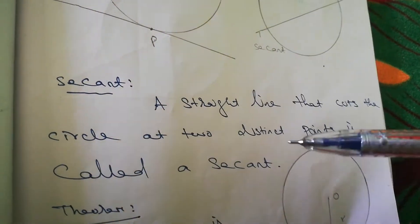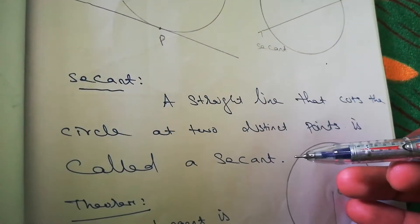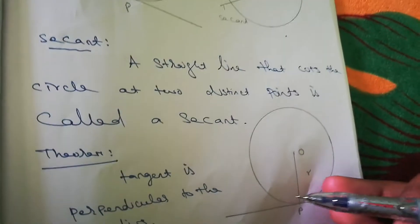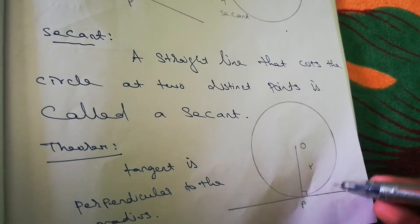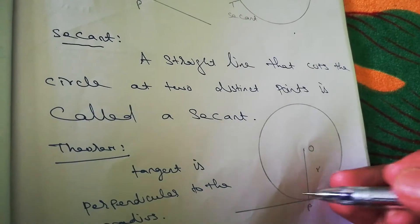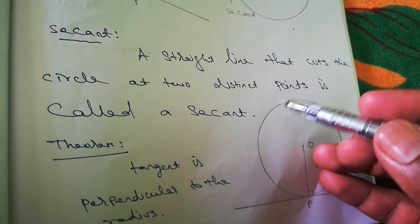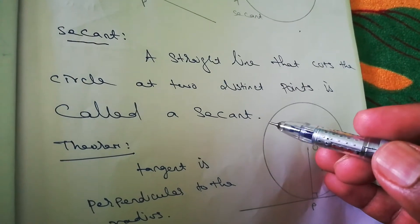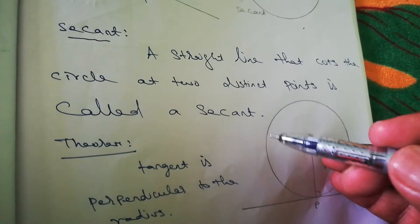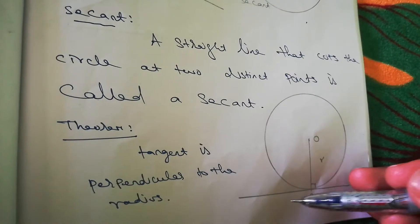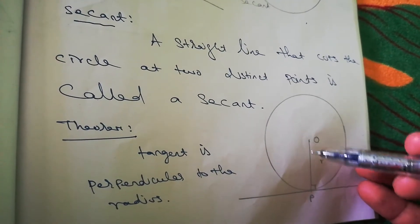Now the theorem: a tangent is perpendicular to the radius. We can draw tangents at any point on the circle. Because a circle has many points, a tangent can come from any of them. Only one tangent can be drawn at one point on a circle. The tangent is always perpendicular to the radius at that point.